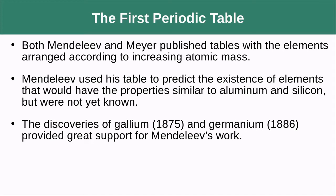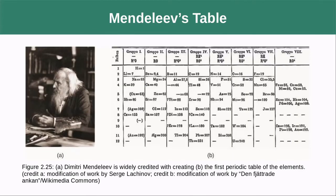They both published their tables organized according to increasing atomic mass. Mendeleev was actually able to use this table to predict the existence of elements that had not been discovered yet, and when they were later discovered, this provided a lot of support for his ideas. Mendeleev's original table looks very different than the one we know today — and anecdotally, Mendeleev had a great beard.